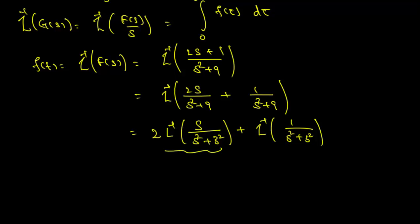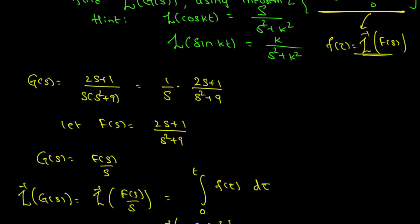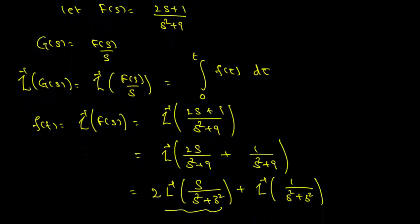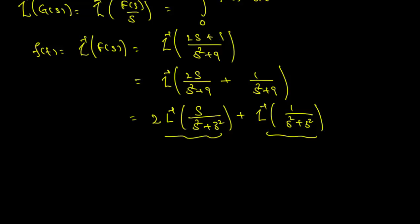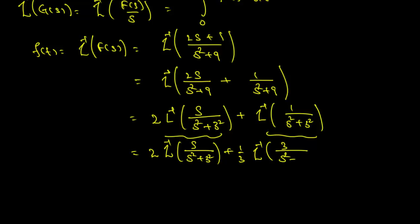Note that s² + 9 = s² + 3², so this is already of the form s/(s² + k²) with k = 3. For the second term, we multiply and divide by 3 and use linearity to get the inverse Laplace transform of s/(s² + 3²) plus (1/3) times the inverse Laplace transform of 3/(s² + 3²).